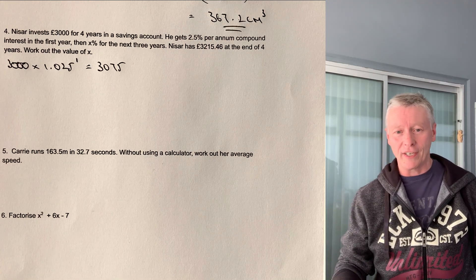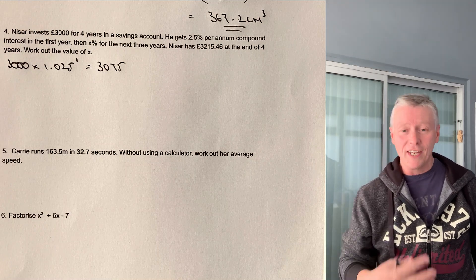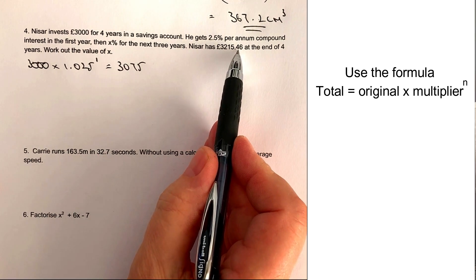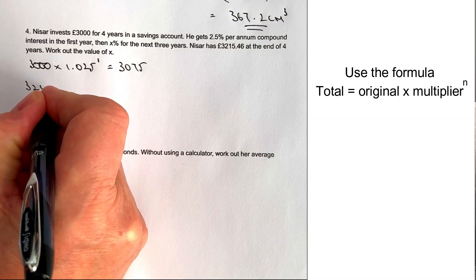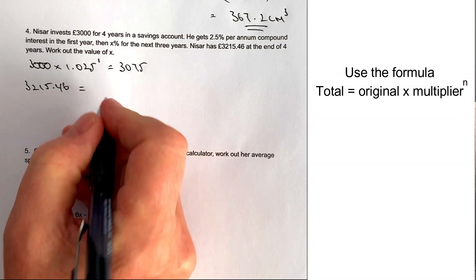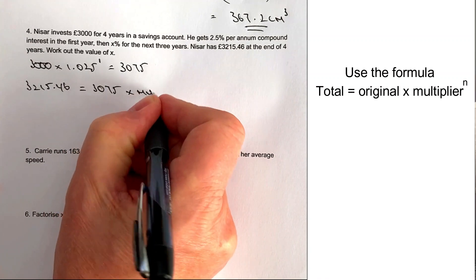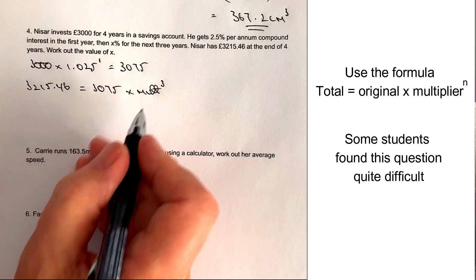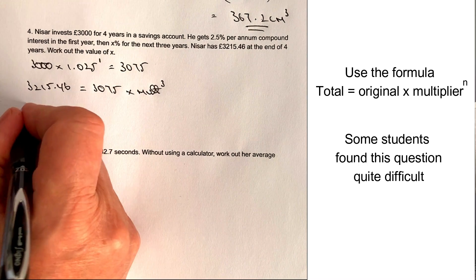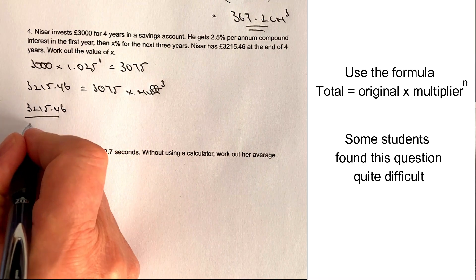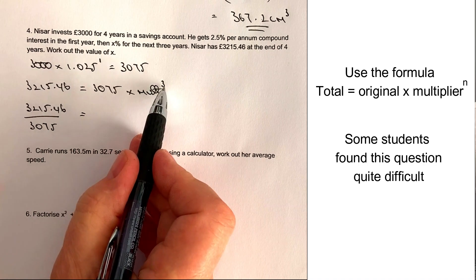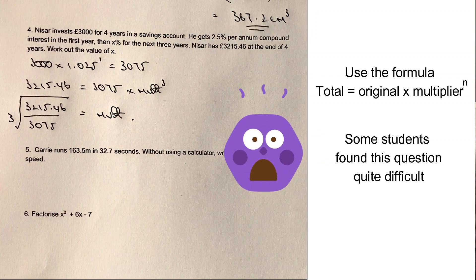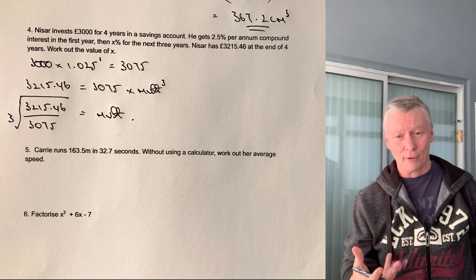What he does then is he puts it back into the interest account. But this time, after a further three years, he gets £3,215.46 back. So what we're saying is £3,215.46 is equal to the original amount, £3,075, multiplied by the multiplier, which is what we're trying to find, to the power of three years. So all I need to do really is make this multiplier the subject of the equation. So I get £3,215.46, all divided by £3,075. Now, don't forget, that's multiplier cubed. So if I do the cube root of that, I'm actually going to get the multiplier. And when I calculate that, I'm going to get 1.0149999.